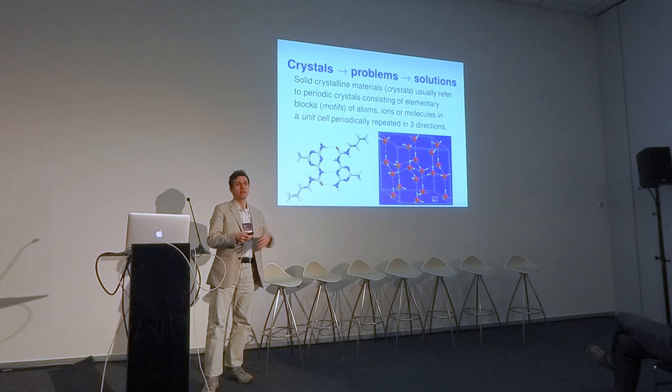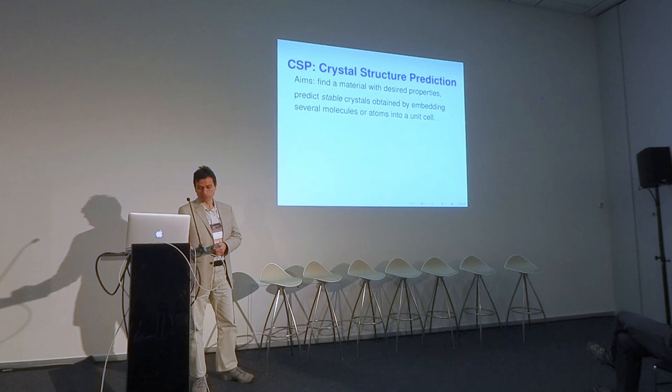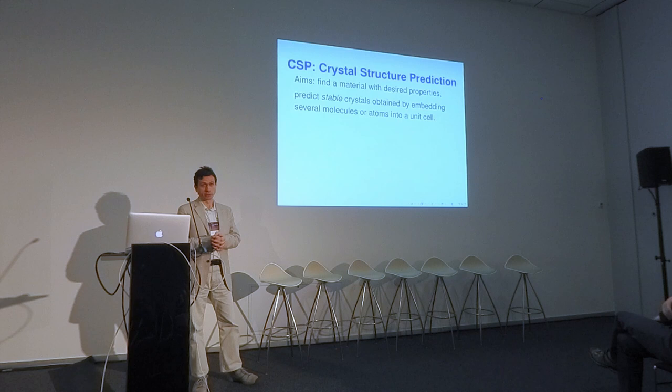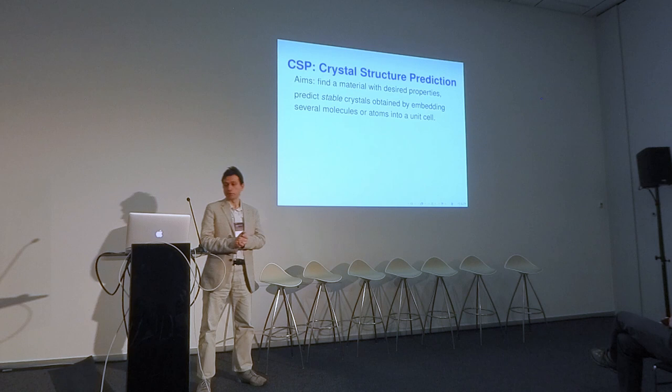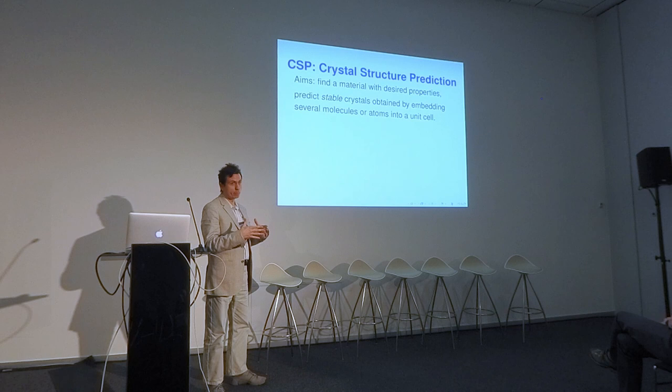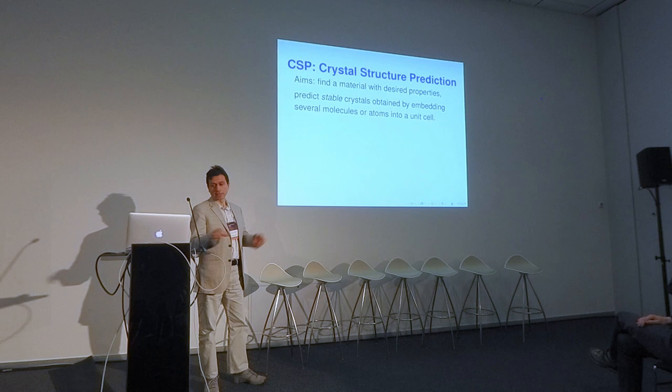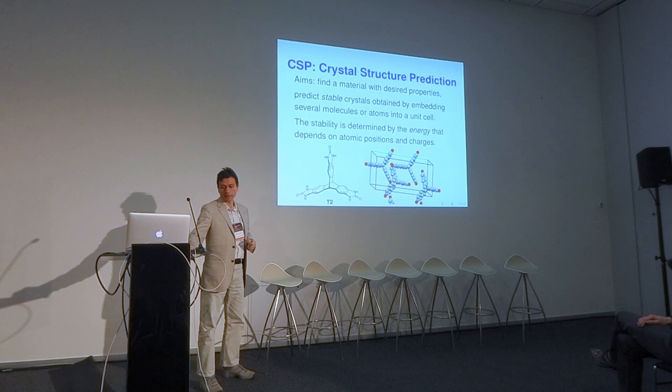I'll start informally from objects, then go to problems, and finally offer some potential solutions. The main problem we'd like to consider is so-called crystal structure prediction — informally, how to design a new material, a new crystalline material — which in more detail means predicting a stable crystal obtained by putting several molecules or atoms in a unit cell.